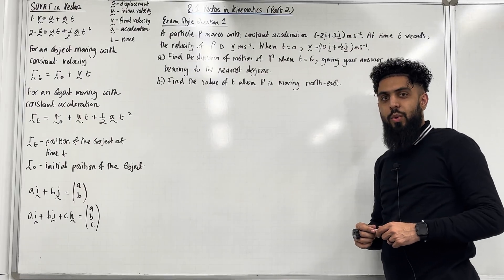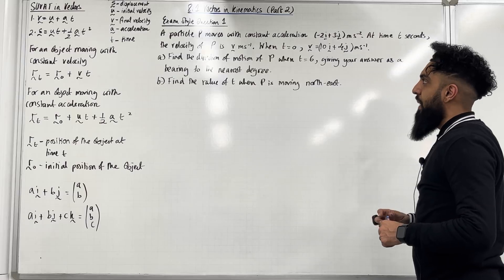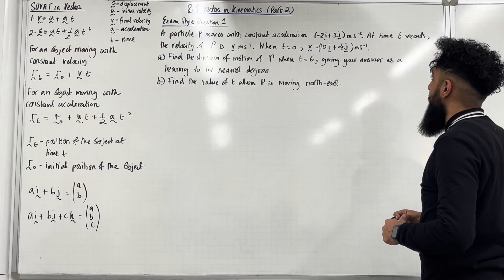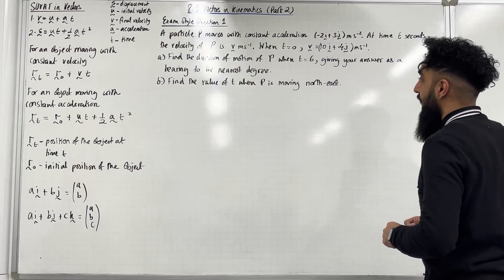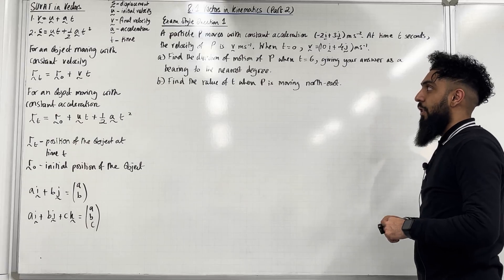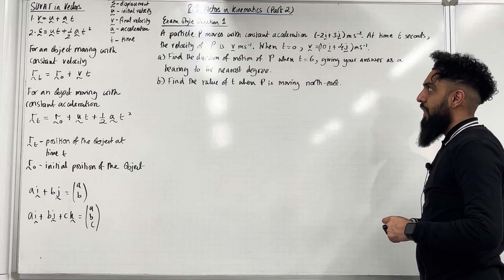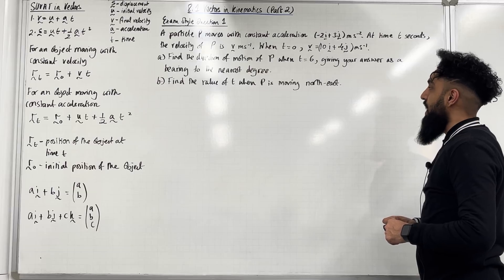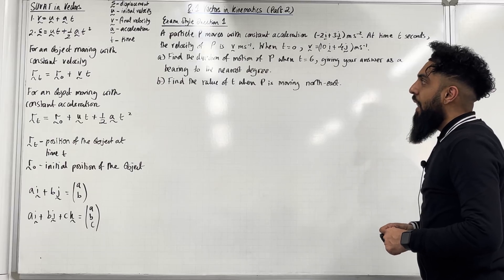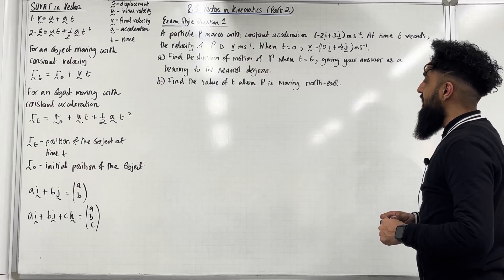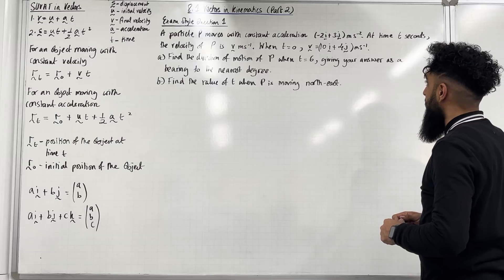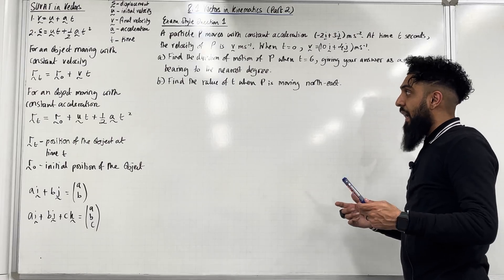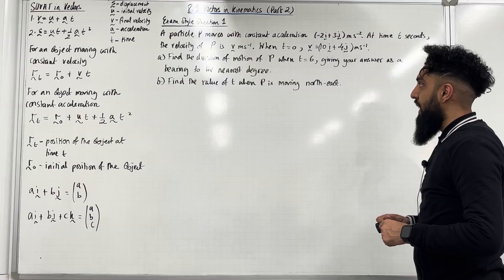Here is exam style question 1. A particle P moves with constant acceleration (−2i + 3j) m/s². At time T seconds, the velocity of P is given by V m/s. When T = 0, the velocity is (10i + 4j) m/s. Part A: find the direction of motion of P when T = 6, giving your answer as a bearing to the nearest degree. Part B: find the value of T when P is moving northeast.